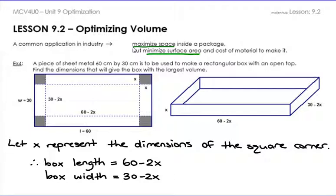Example number four: a piece of sheet metal 60 centimeters by 30 centimeters is to be used to make a rectangular box with an open top. Find the dimensions that will give you the box with the largest volume — so they want to maximize that volume. You can take the sheet metal, which is 60 by 30, and cut out squares in the corners. We're going to call the side of those squares X, so you're cutting off an X-by-X square from each corner.